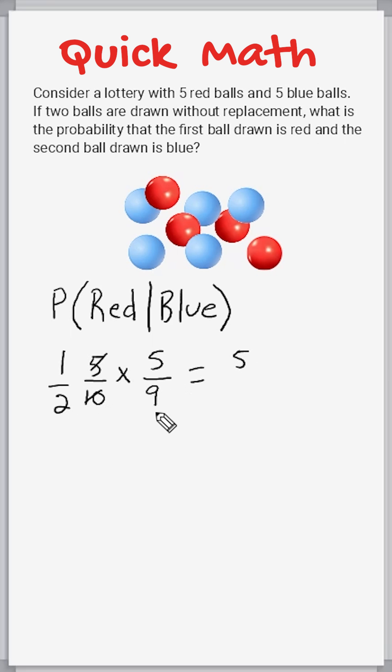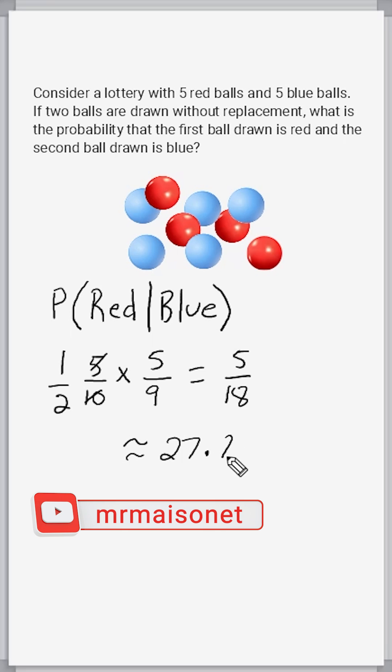and 2 times 9 is equal to 18. So the probability of selecting first a red and then a blue is 5 out of 18, which as a decimal is approximately equal to 27.8%, rounded to the nearest tenth of a percent.